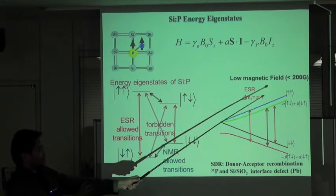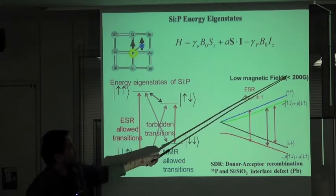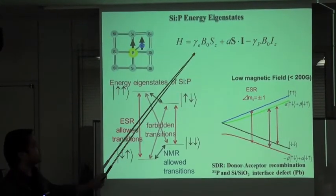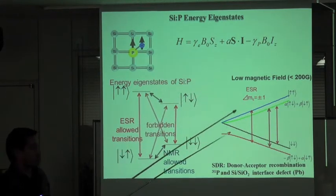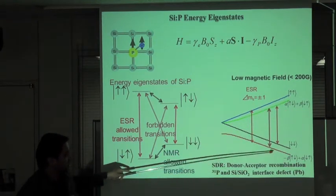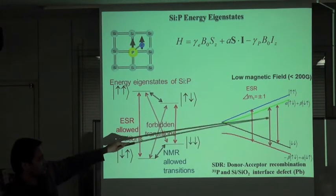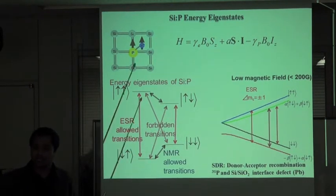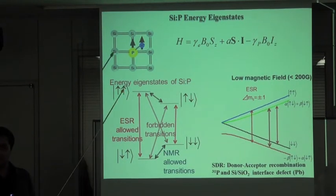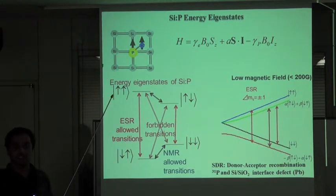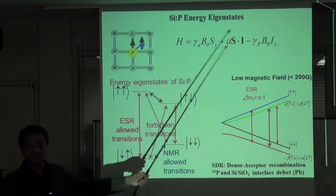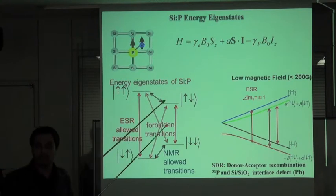Now, going to low magnetic field—for example, less than 200 Gauss—the hyperfine interaction term dominates the whole Hamiltonian. As a result, we no longer have pure states but superposition states. Because of these superposition states, the forbidden transitions acquire finite probability. However, we cannot see this using conventional ESR because ESR signal intensity depends upon the magnetic field. At very low magnetic field, the intensity would be very small, so no signal would be visible.